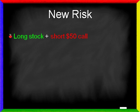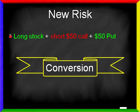Because he owns the shares, he's now at risk if the stock price falls. To hedge that risk, he could buy a $50 put, and let's assume he pays $2 for the put or $200 total. The package of these three assets — long stock, short call, and a long put — has a special name. It is called a conversion.